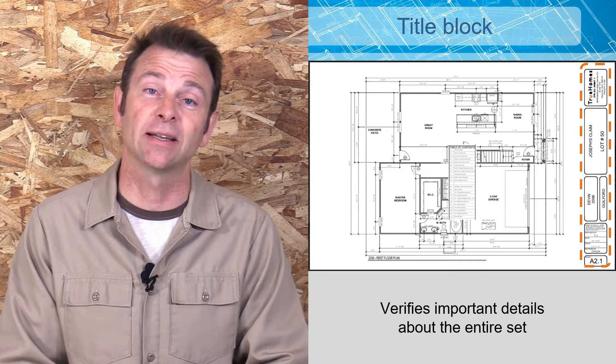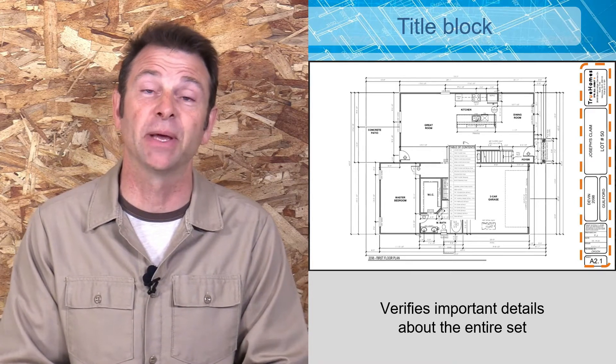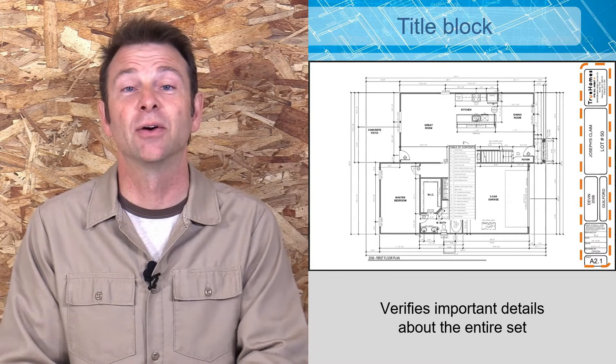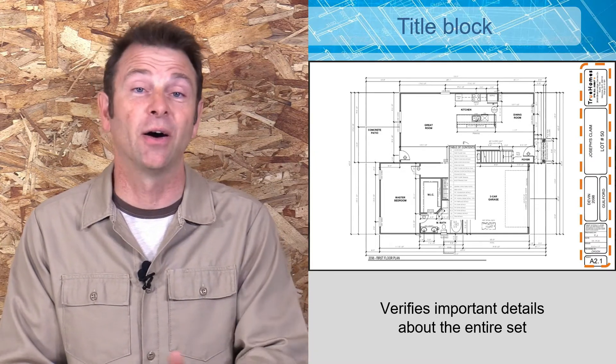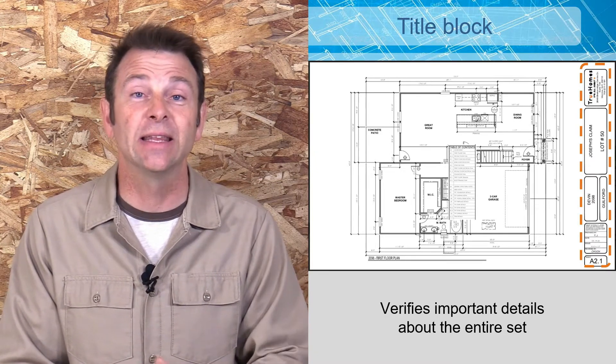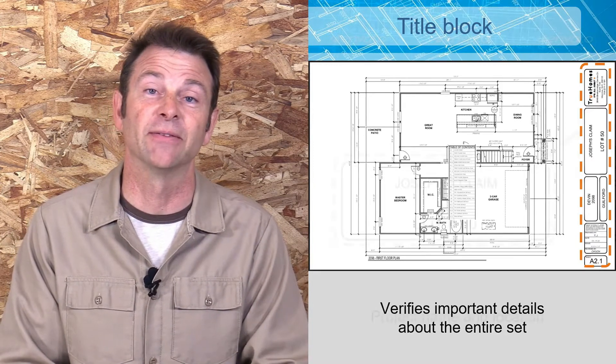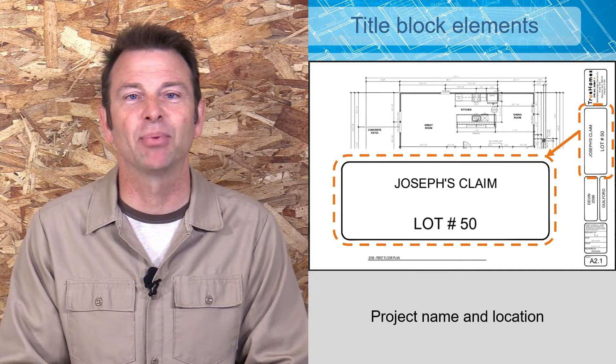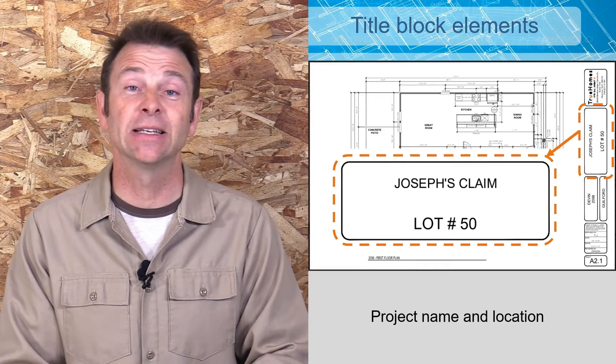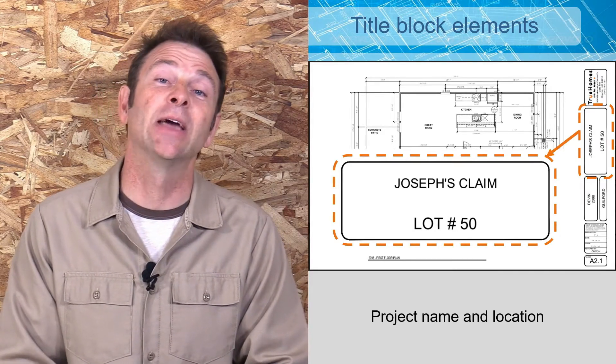Here we have the title block. If we're talking about components on a set of plans, the title block is really important. A title block should carry through all of the pages, generally located on the perimeter, often on the right. Each title block will have separate sections in it to carry specific information.